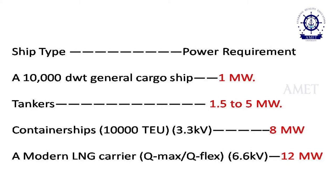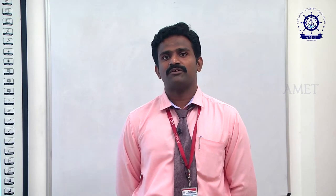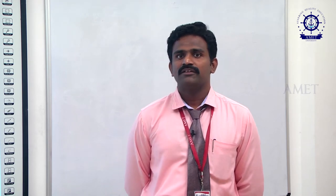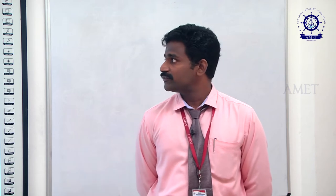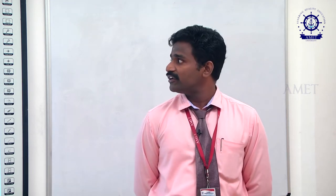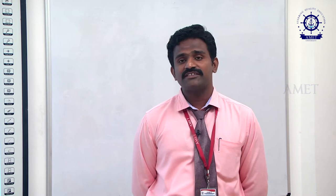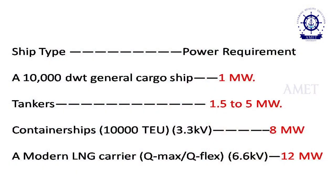We first need to know how much voltage is generated. Depending on the ship and its power requirement, ships generate various amounts of power in megawatts. For example, the first type is a cargo ship. Normally, a general cargo ship has a power requirement of 1 megawatt.